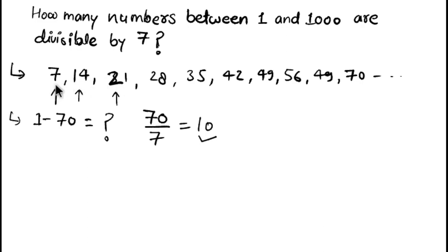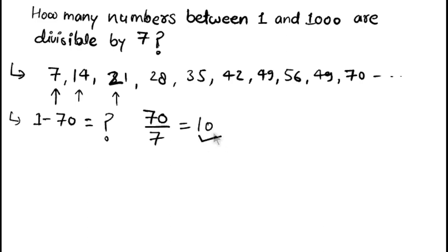You can confirm it by counting these numbers — the ones divisible by seven up to seventy. Count: one, two, three, four, five, six, seven, eight, nine, ten. There are ten numbers, which matches what I found, so this logic is completely true for finding the required count of numbers divisible by seven.